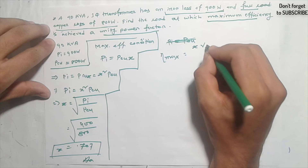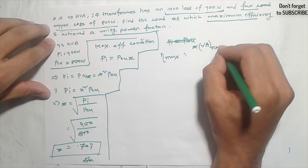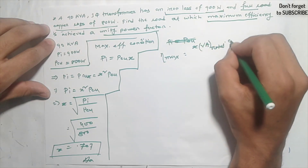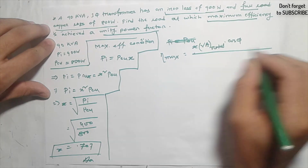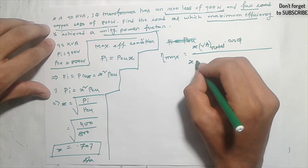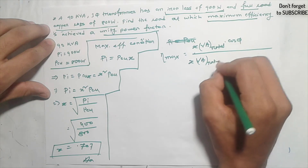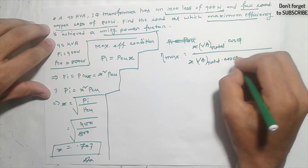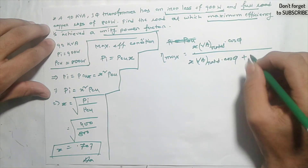Efficiency equals x times VA rated times cos phi as output, divided by x times VA rated times cos phi plus losses.